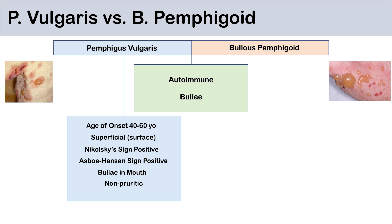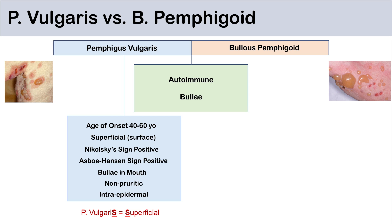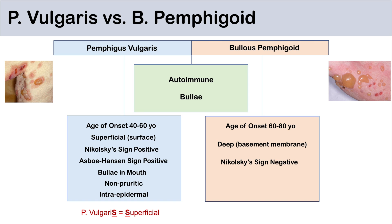A key point for pemphigus vulgaris is that it's a more superficial process — remember S for superficial. For bullous pemphigoid, the age of onset is older at 60 to 80 years old. It is a deeper process with autoantibodies targeting hemidesmosomes at the basement membrane. The Nikolsky sign is negative, the bullae are tense compared to the flaccid bullae of pemphigus vulgaris, and the bullae are pruritic. This is a subepidermal process at the basement membrane. Remember D for deep — pemphigus vulgaris is S for superficial, bullous pemphigoid is D for deep.